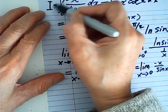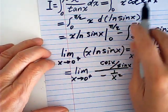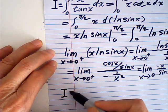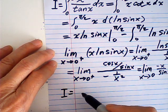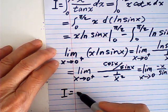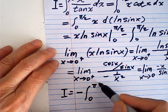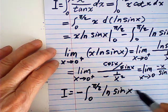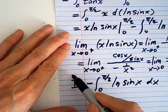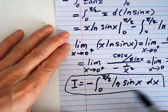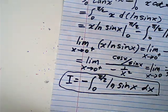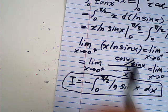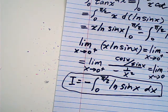So that means this one is 0. My integral I is equal to negative of the integral from 0 to π/2 of natural log(sin x) dx. So that is my integral — we find the answer in this form.